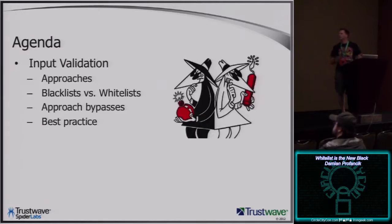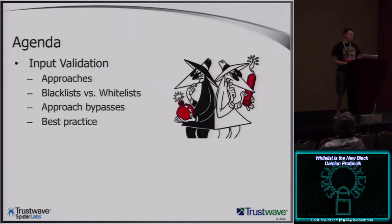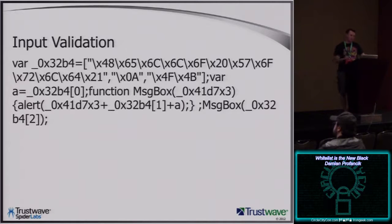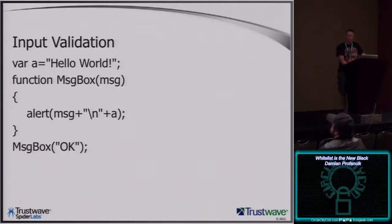We're going to talk about approaches to input validation, whitelists versus blacklists, and some techniques I've seen that work pretty well at bypassing some of the protections. The reason why input validation is hard is because there are so many different ways to express data. That's a program — it's pretty heavily obfuscated, but it basically does that: it just pops up an alert box. But if you're looking at it, you'd be like, what the heck?